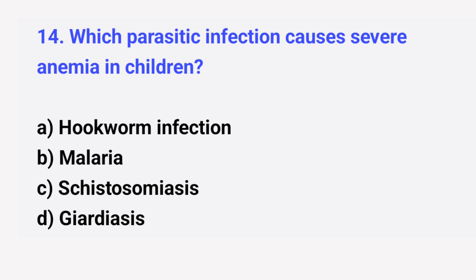Question number 14. Which parasitic infection causes severe anemia in children? The right answer is option A: Hookworm infection.